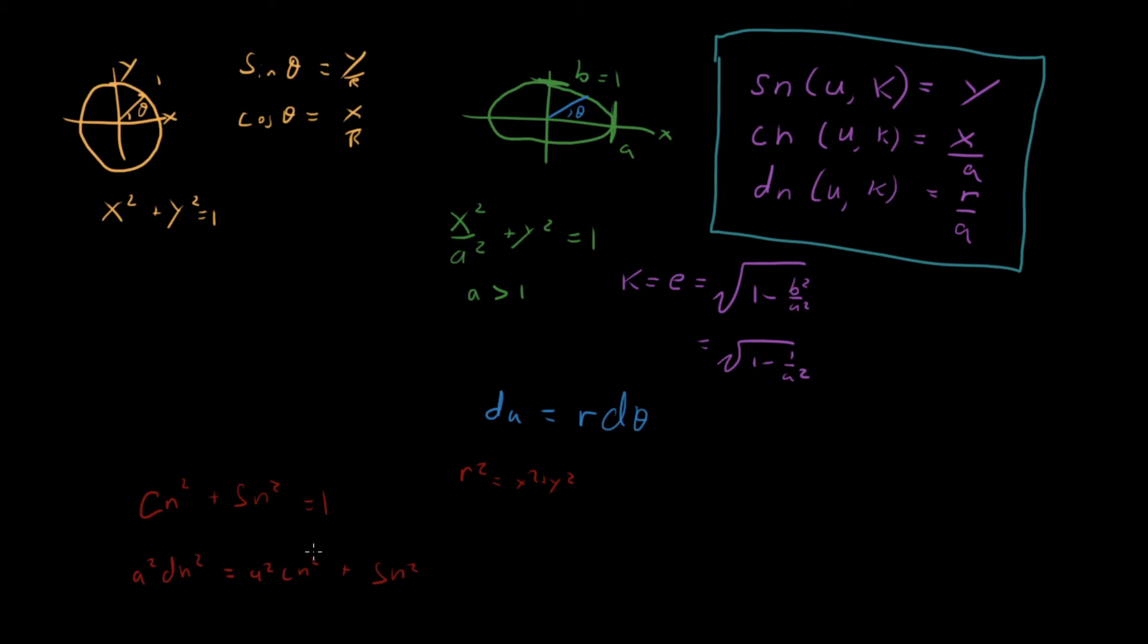And so this is, in the case of circular trig, this is the exact same as this, right? In the case of circular trig, dn is equal to 1, a is equal to 1. So this would just be 1 equals sn squared plus cn squared. But now that we're looking at elliptical trig, this is actually a different identity. So we get this extra thing right here.